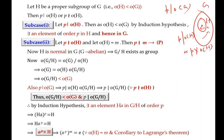Now we consider the subcase where P does not divide the order of H. Suppose the order of H is M, then P does not divide M — we shall name this as statement P. Now G being abelian, and H being a subgroup of abelian G, H is normal in G. So G mod H will have the structure of a quotient group.